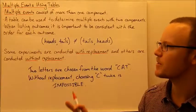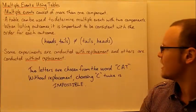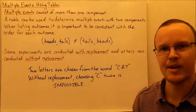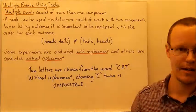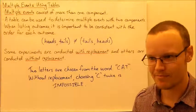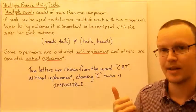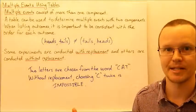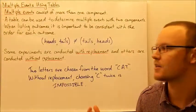Some experiments are conducted with replacement and others without replacement. When flipping a coin, we often flip the same coin, so that occurs with replacement. We can flip tails and then flip tails again the second time.